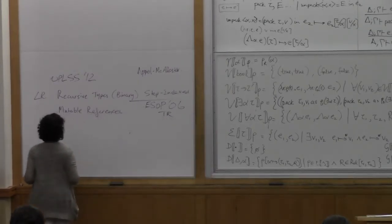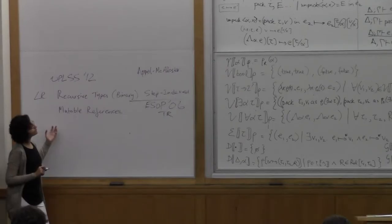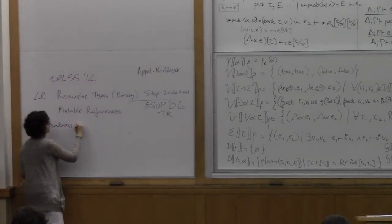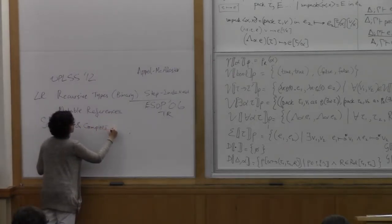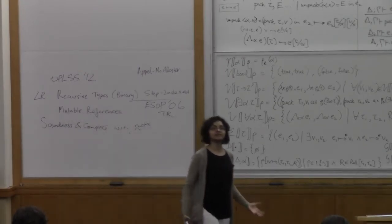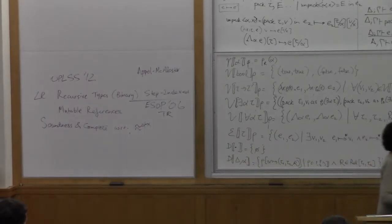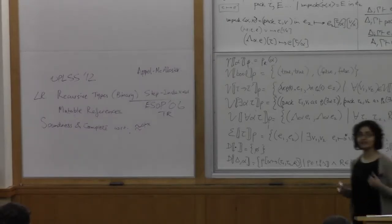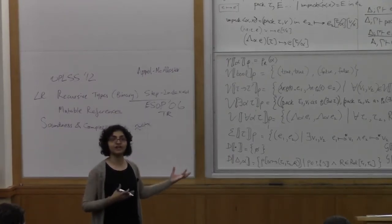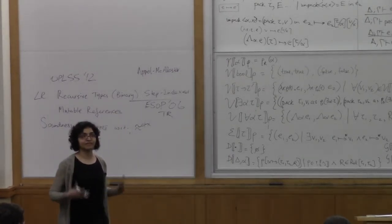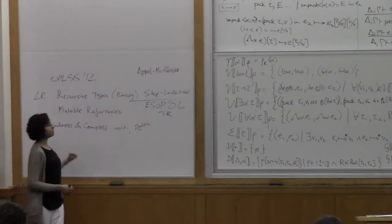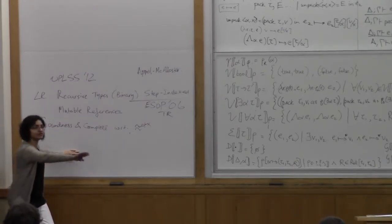Soundness and completeness is also covered in these lectures, like the technicalities of how you prove that logical relations are sound and complete with respect to contextual equivalence. And that's a really important thing. I kind of keep coming back to it because that's why we build these logical relations. We want a proof method to show that two programs are equivalent. And so knowing the details of how you, once you've set up this logical relation, how do you establish that it is exactly the same thing as what is defined by contextual equivalence? That's critical. That's important to know and do. So the OPLSS 12 lectures cover all of that.